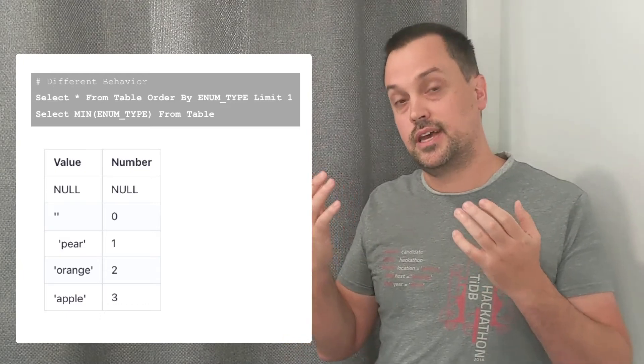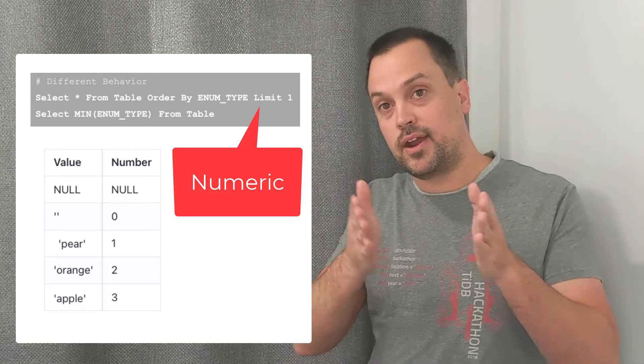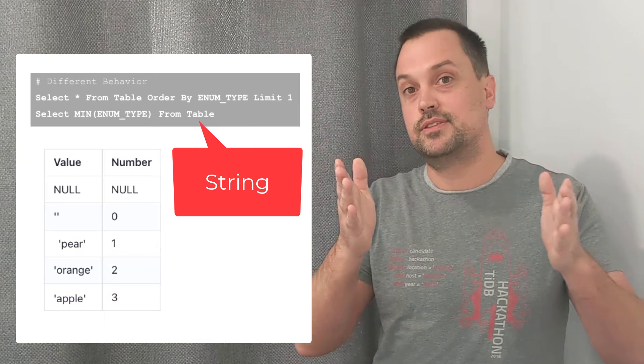But, in fact, these results are different, and it's documented. If you use the order by, it uses the numeric offset of the enum, and if you use the min function, it uses the string value.